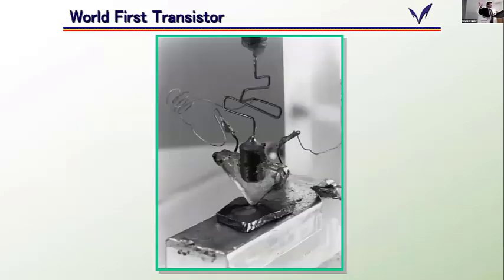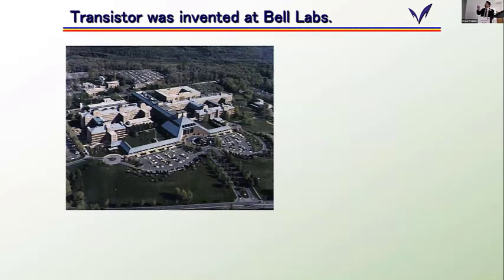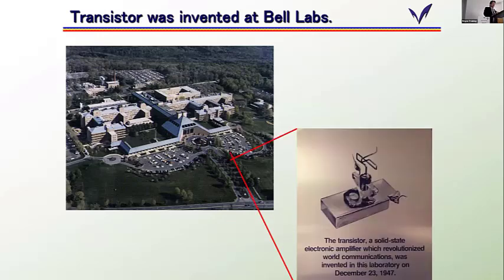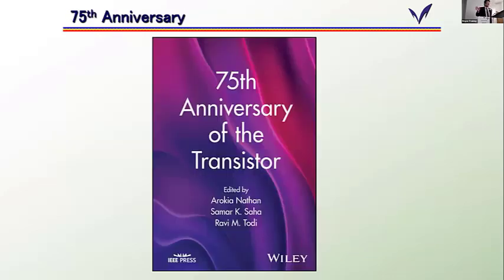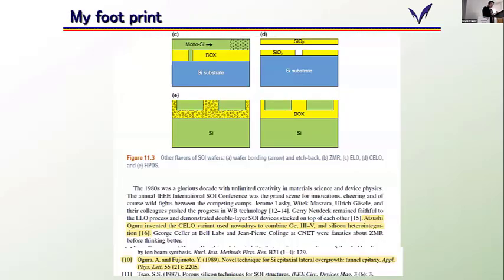The world's first transistor was invented at Bell Laboratories in New Jersey, in 1947, just before Christmas Day, December 23rd. So this is approximately the 75th anniversary of the transistor invention. I published a booklet to celebrate the transistor invention, and I'd like to emphasize that the most important part is on page 118 — you can find my name, Atsushi Ogura. I'm very proud to have left a footprint of four lines in the history of the transistor.